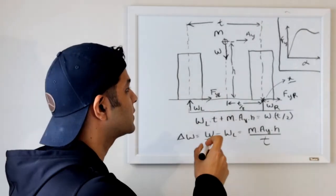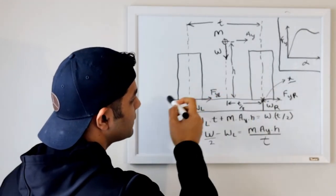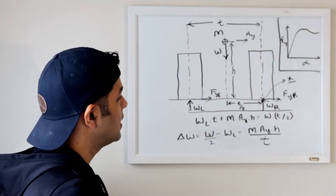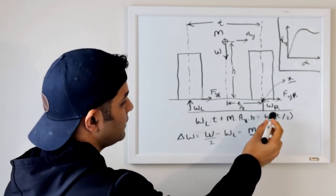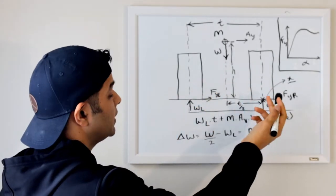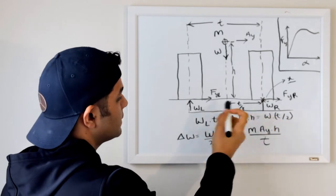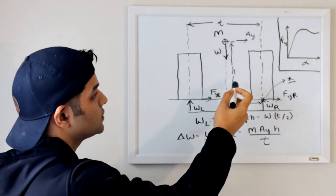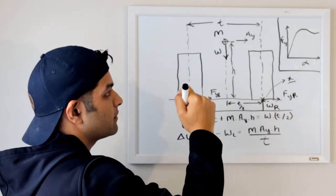As you can see over here in the diagram, we have two wheels, left and right side. We have weight of the vehicle acting in downwards direction, which is counteracted by the reaction forces on the left and right side tires by WL and WR. T is the track width, H is the height of the CG and this is the center of gravity over here.